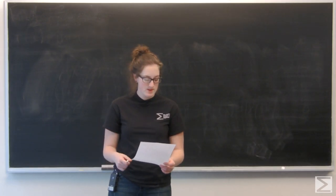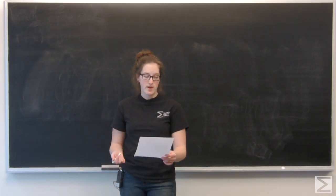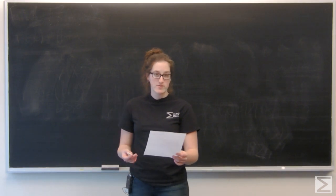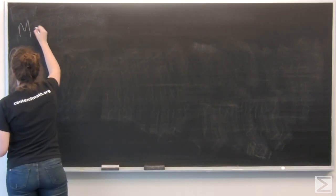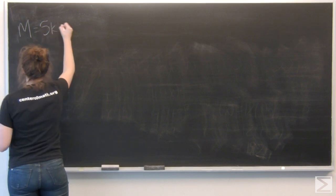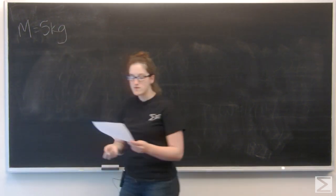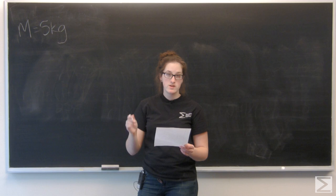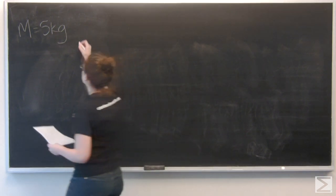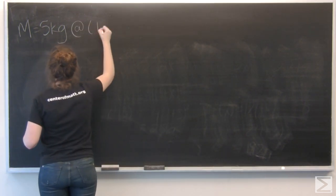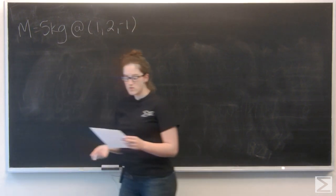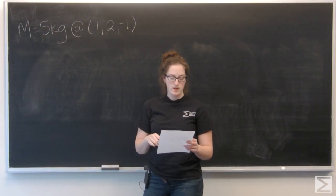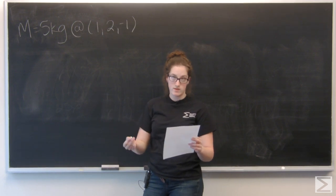Let's take a look at this problem. Suppose a point mass of mass equals 5 kilograms is located at the point 1, 2, negative 1, where all coordinates are in meters. Let F equal F of x, y,